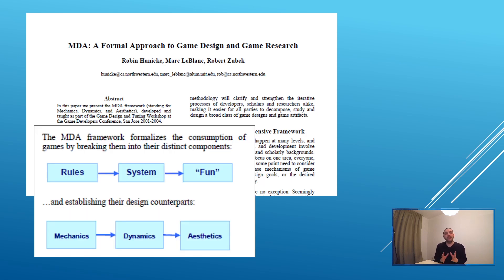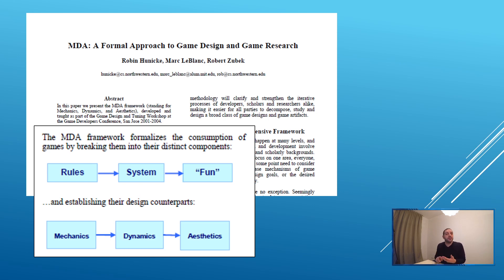The MDA framework stands for Mechanics, Dynamics, and Aesthetics. Basically, mechanics are the rules in your game — for example, an armor has armor value X, a sword has attack value Y, and there's a formula for how those interact. The dynamics or systems are things like the combat system, loot system, inventory system, dialogue system, and map system. Any system consists of several mechanics, and all the systems together try to achieve fun — the player experience — which the MDA paper describes as the aesthetics of play.